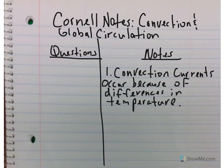The first thing we're going to write down is convection currents. Convection currents occur because of differences in temperature. This is the same idea that hot things go up and cold things go down, but let's apply it to the ocean.